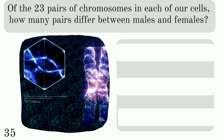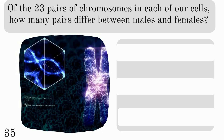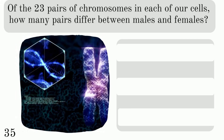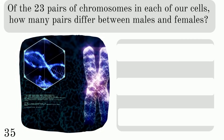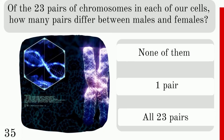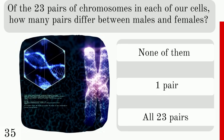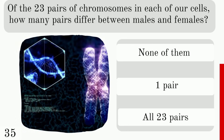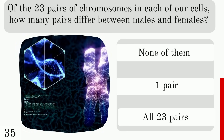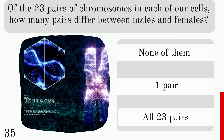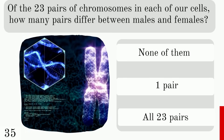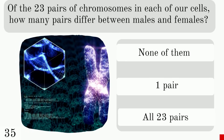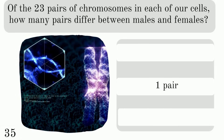Of the 23 pairs of chromosomes in each of our cells, how many pairs differ between males and females: none of them, one pair, or all 23 pairs? The answer is one pair.